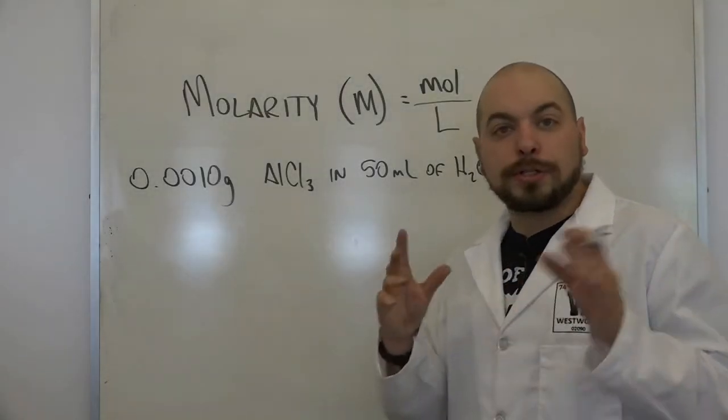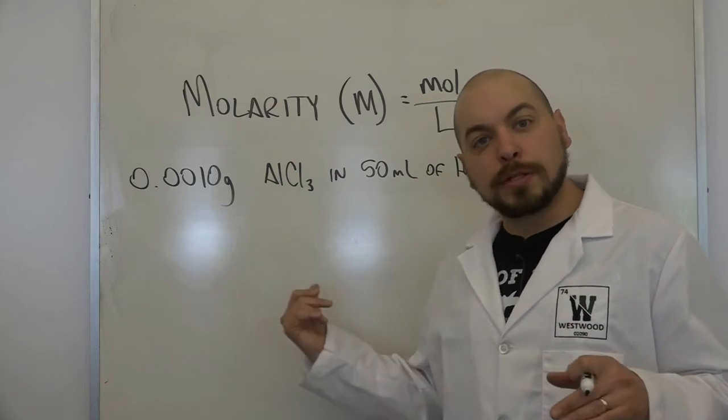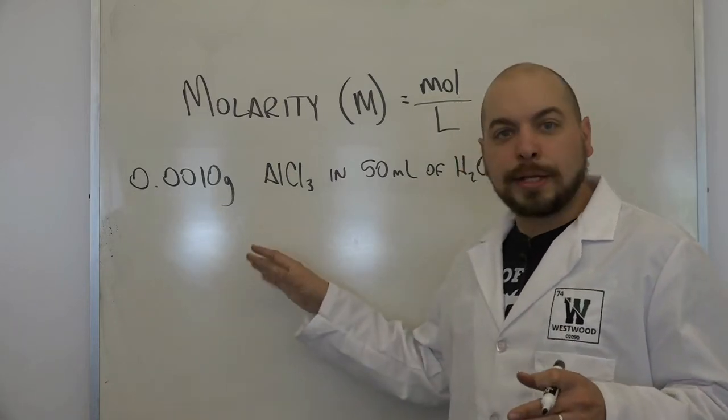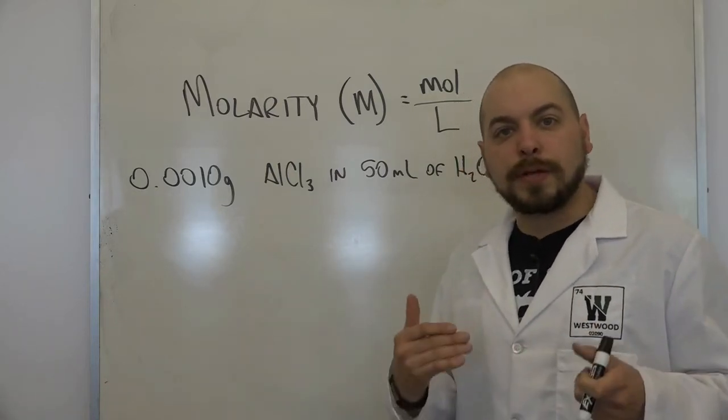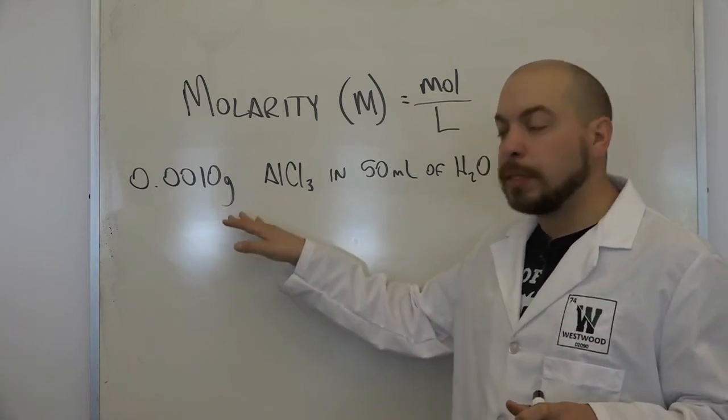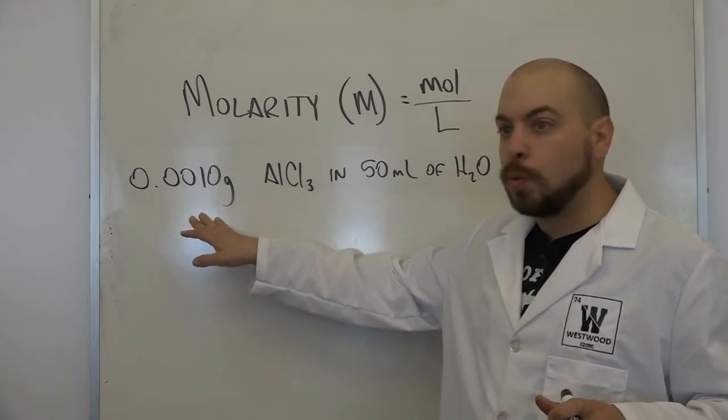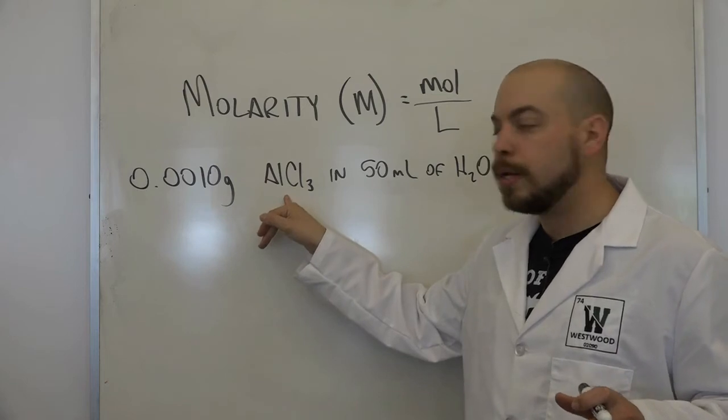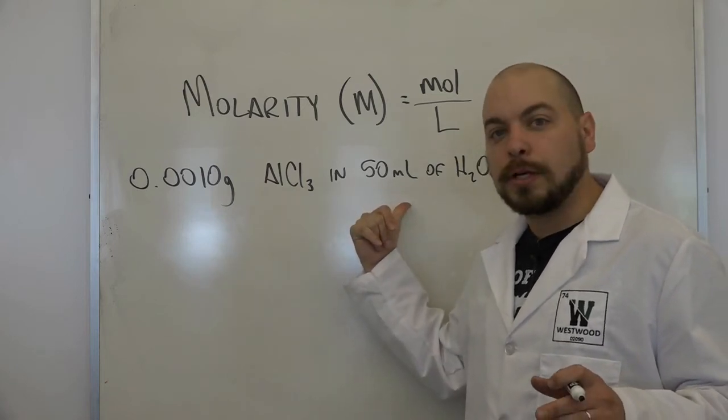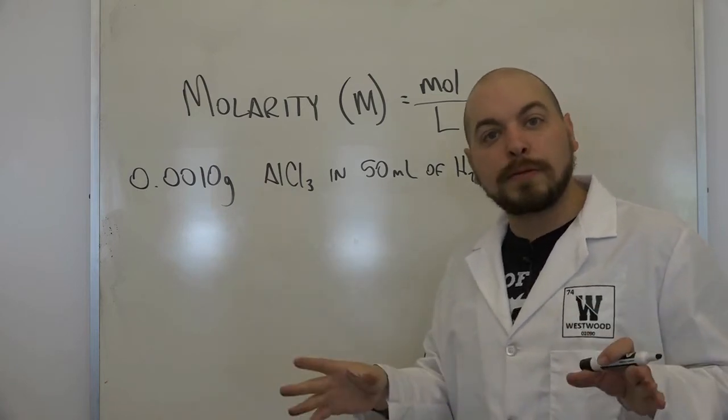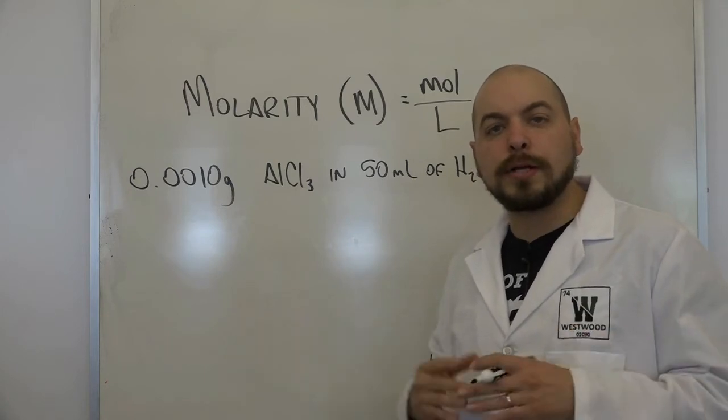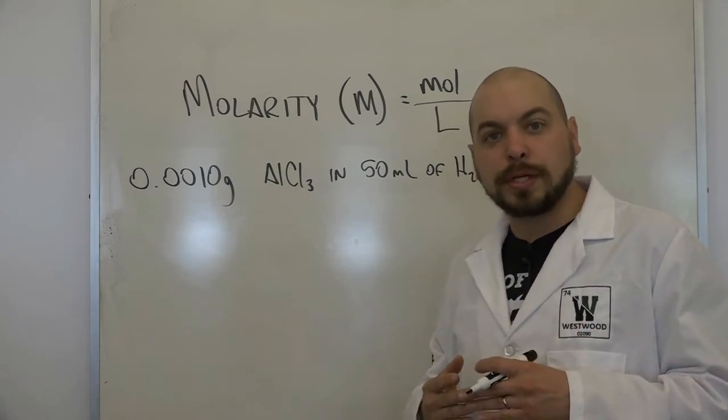All right, for this next problem, I want you to try it on your own. Take a few seconds, pause the video if you need to. If you get an answer or get stuck, go ahead and unpause the video. In this case, I'm going to ask you to find the molarity of 0.0010 grams of aluminum chloride dissolved in 50 milliliters of water. So like I said, go ahead and pause the video if you need to. Take a second, solve, and when you're done, go ahead and unpause the video. We'll work through it together.